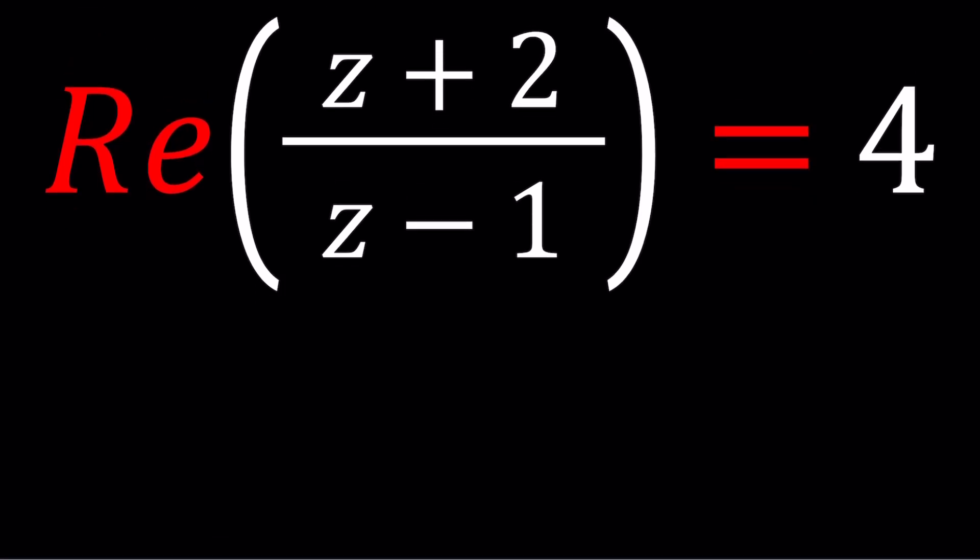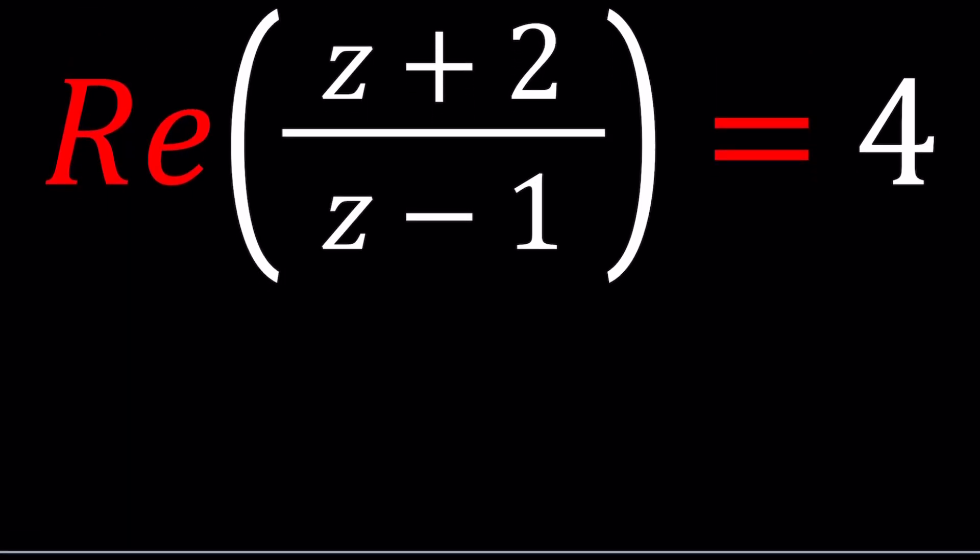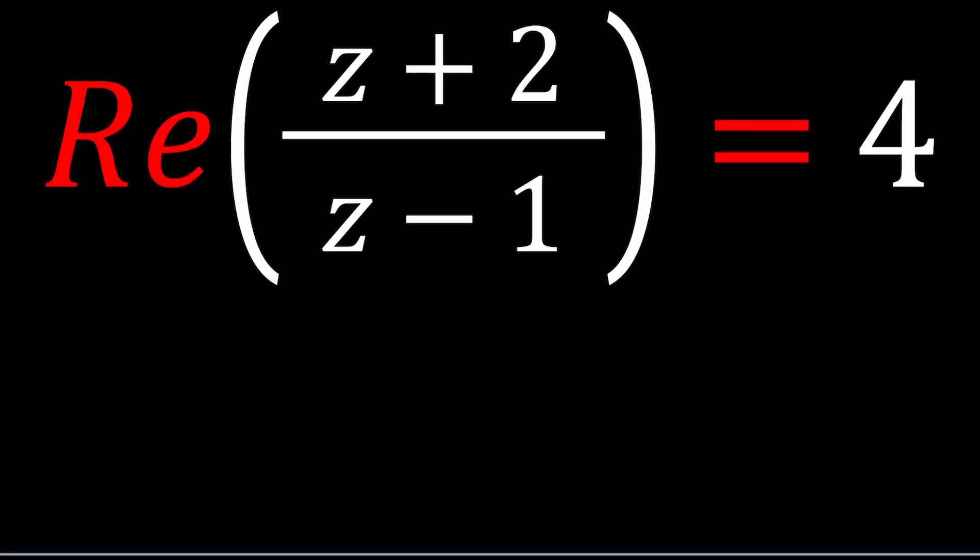Now, to be able to solve this problem, and since this is a locus problem and the name of this channel is A plus B I, I'm going to replace z with x plus y I. When you do that, you're going to get the following.